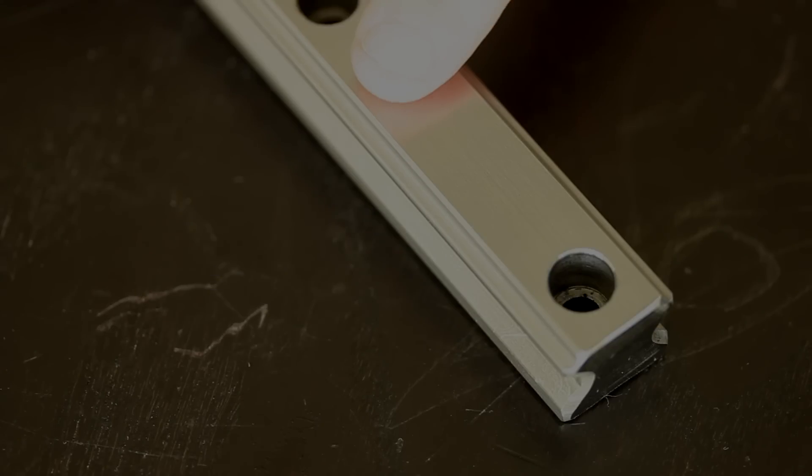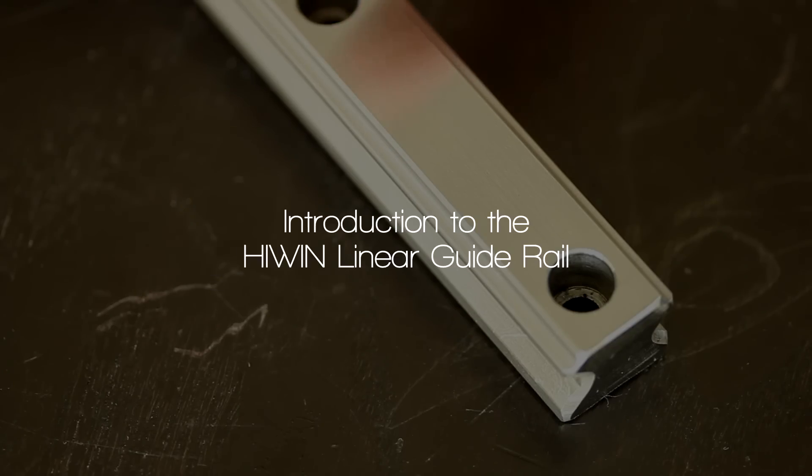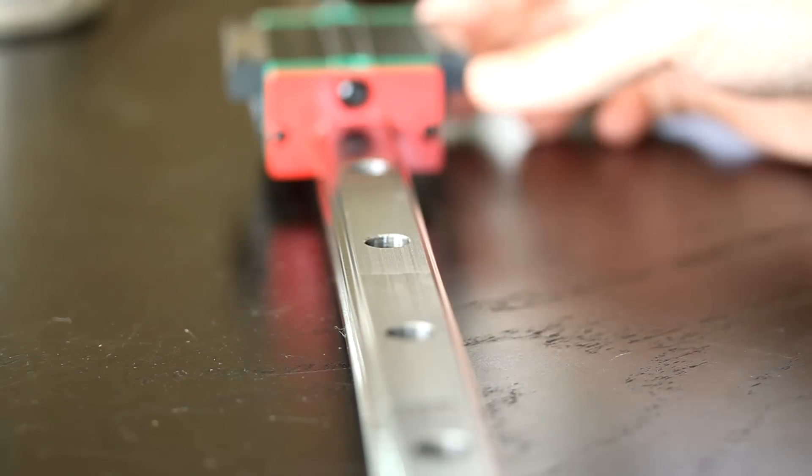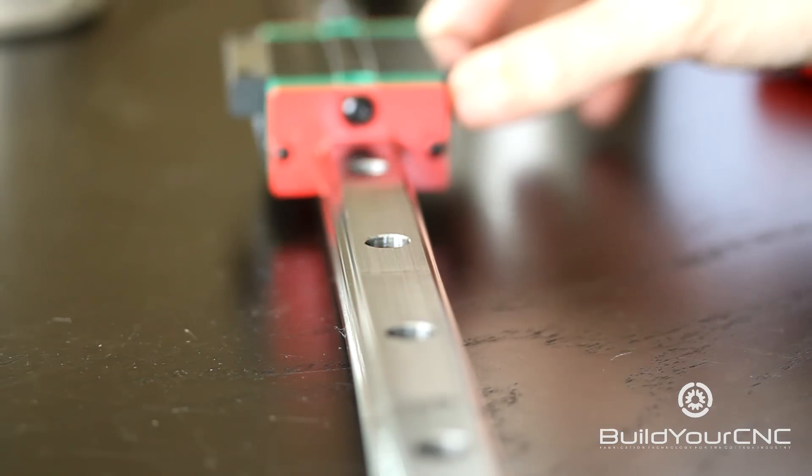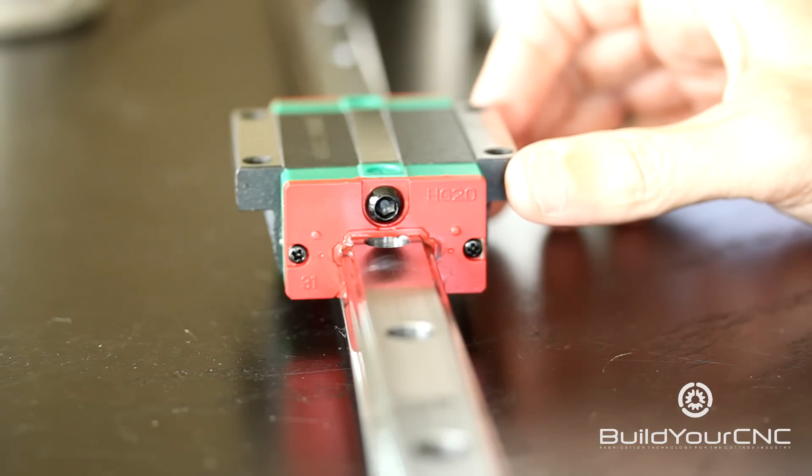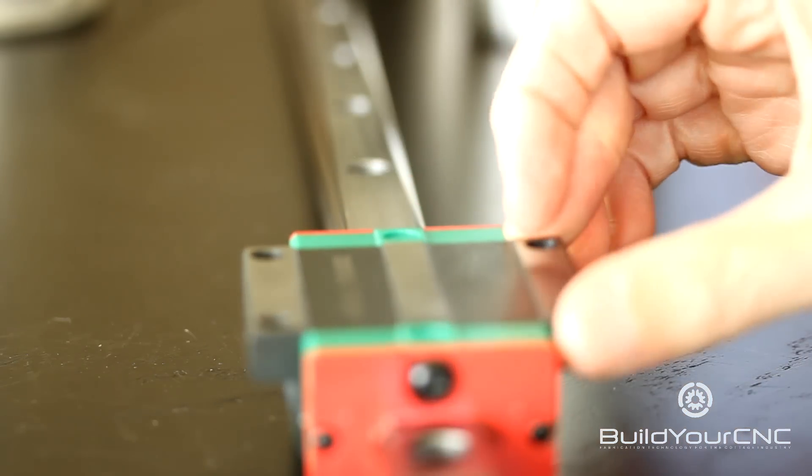This is the high wind linear rail that we sell at BuildYourCNC.com. The function of this rail is to provide a stable guideway that is extremely rigid and allows that axis of movement to maintain its position across a linear space.